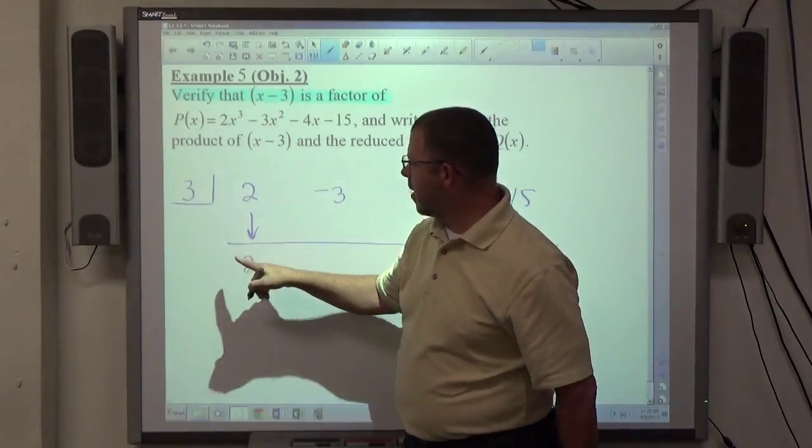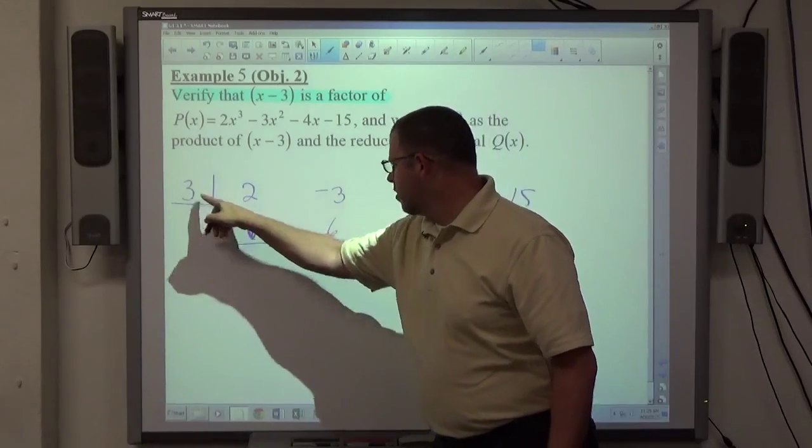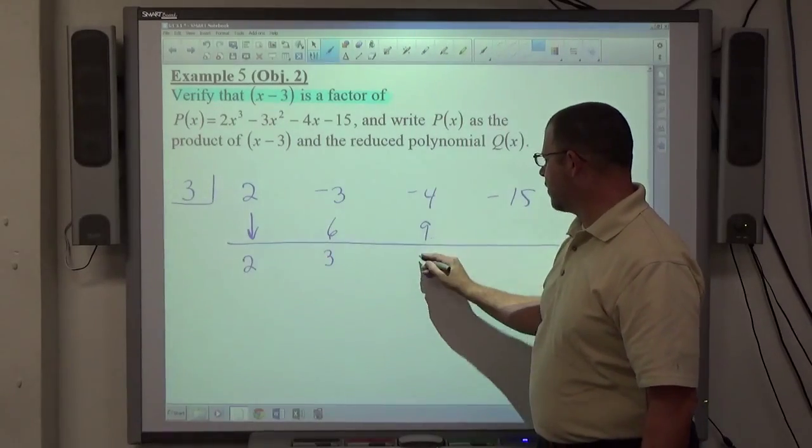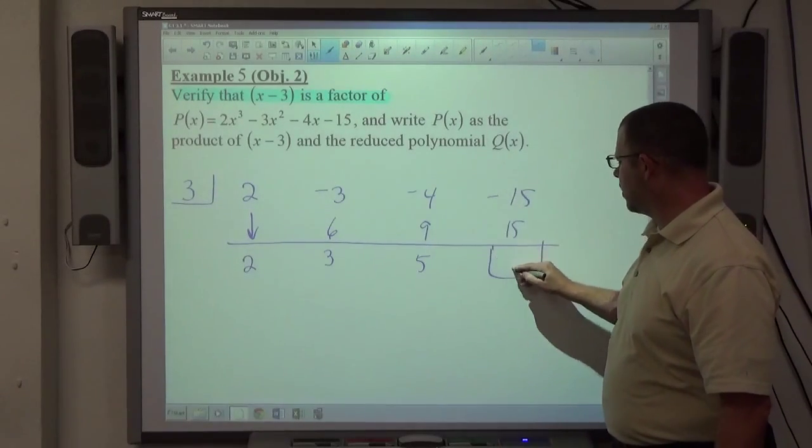Each time, multiply by the number up in the box. So 3 times 2 is 6, negative 3 and 6 is 3. 3 times 3 is 9, negative 4 and 9 is 5. 3 and 5 is 15, negative 15 plus 15, remainder is zero.